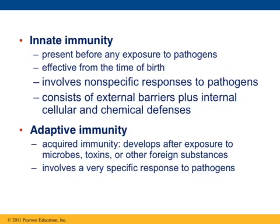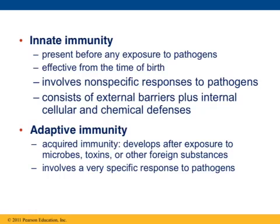Adaptive immunity is what you have acquired over the span of your life. It's developed after you've been exposed to certain things like microbes and toxins and other foreign substances. When you were little and played in the dirt, that actually helped build your adaptive immunity. Kids who've been sheltered and never exposed to germs don't develop a very strong adaptive immunity — that's why when they go to daycare for the first time they get sick. One of the main differences is that adaptive immunity is a specific response: it changes depending on what is making you ill.